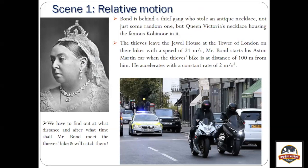Every slide will tell us a short detail about what is going on and how he is going to tackle the situation. James Bond is behind a thieves gang who stole an antique necklace — not just some random one, but Queen Victoria's necklace. The thieves leave the Jewel House at the Tower of London on their bikes with a speed of 21 meters per second, and Mr. Bond starts his Aston Martin when the thieves' bike is at a distance of 100 meters from him. He accelerates with a constant rate of 2 meters per second squared.